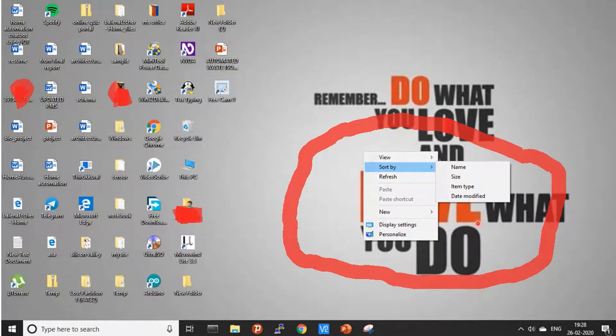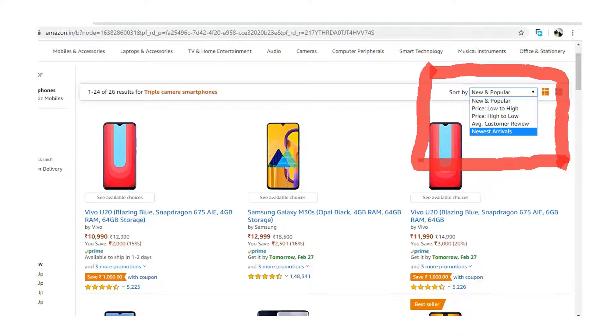You can see in your desktop, you can sort the icons by name, size, item type, or date modified.